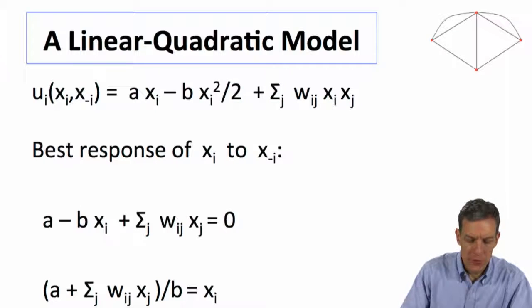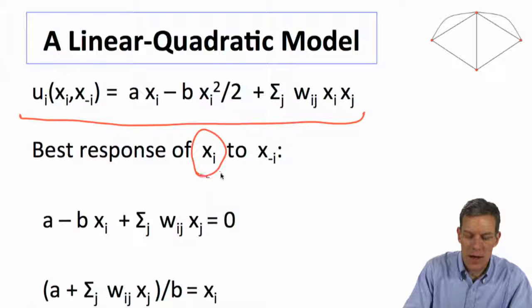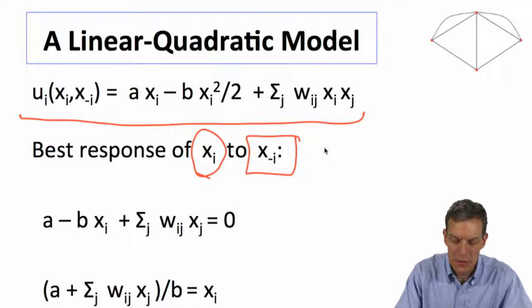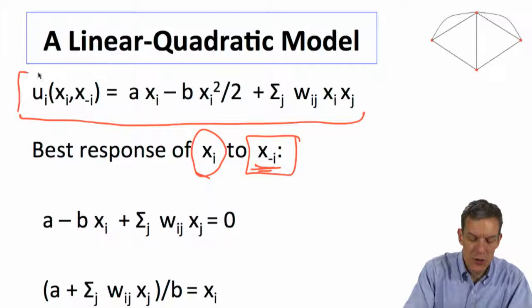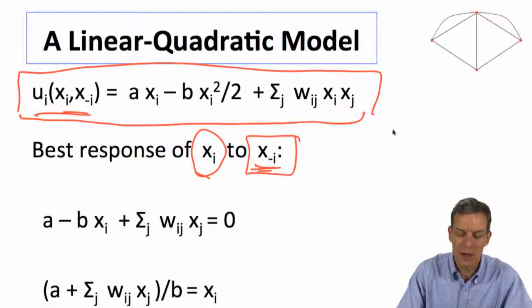Okay, so we've got this payoff, and we want to figure out what's the best xi in response to what other people are doing. So when I say x minus i, this is the vector of the actions for everybody else besides i. So if you maximize this function with respect to xi, just take the derivative of this and set it equal to 0. So if you want to maximize this function, what's the maximizing action? Just set the derivative of this thing with respect to, so take dui, dxi,